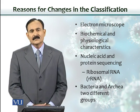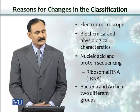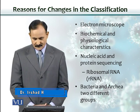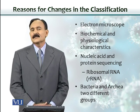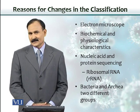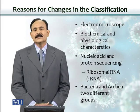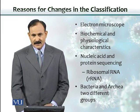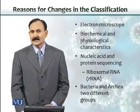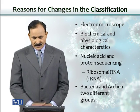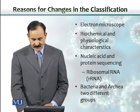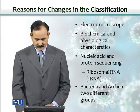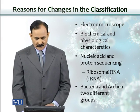But later studies, when sophisticated tools from the field of molecular biology became available and scientists started studying DNA and RNA sequences, they came to know that the previous five-kingdom classification did not answer all the questions. The knowledge created by use of the electron microscope, biochemical and physical characteristics of microbes, and nucleic acid and protein sequencing made the previous classification largely obsolete. Microbiologists and taxonomists came up with another scheme largely based on ribosomal RNA sequences.